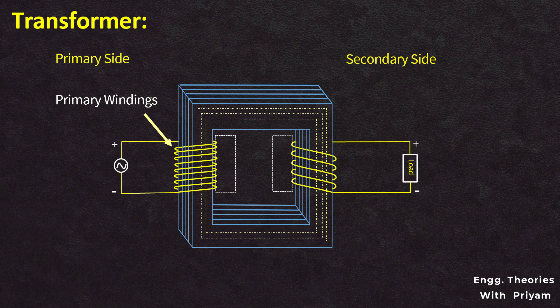The secondary side contains a secondary winding or secondary coil, where the number of turns is equal to N2.